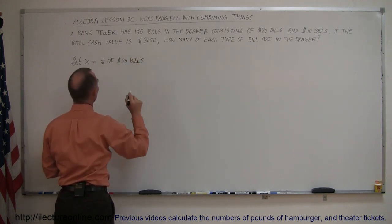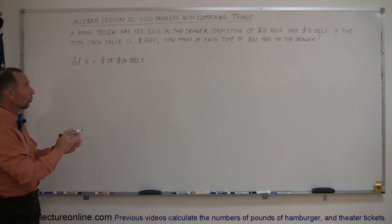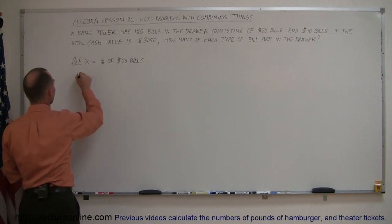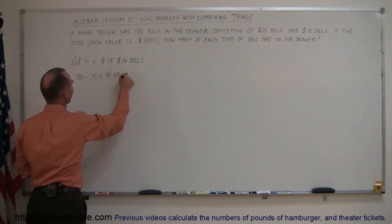Then how do we express the number of $10 bills? Well, we're told there's a total of 180 bills, so the total minus x will be the number of $10 bills. So 180, that's the total, minus the number of bills that are x, that are $20 bills, equal the number of $10 bills.